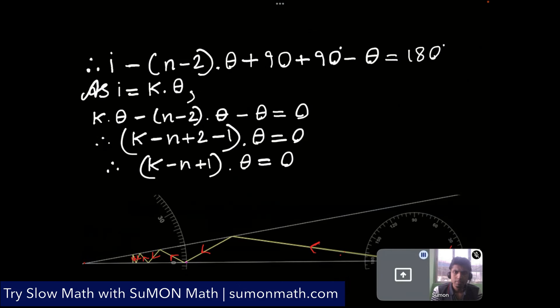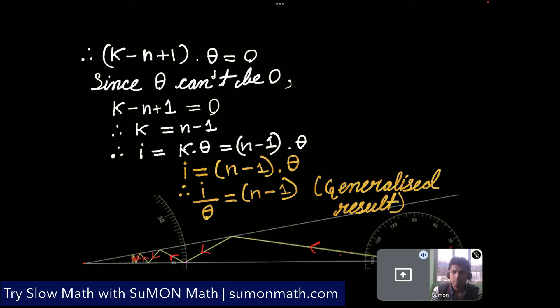So we again do the similar triangle sum that we did earlier. So we substitute i is equal to k theta. We will get k minus n plus 1 into theta is equal to 0. Theta can't be 0. So k is equal to n minus 1. And we substitute this in i is equal to k theta. So i is equal to n minus 1 into theta. So n minus 1 will always be the ratio between i and theta. And this is the generalized result for n incidence.